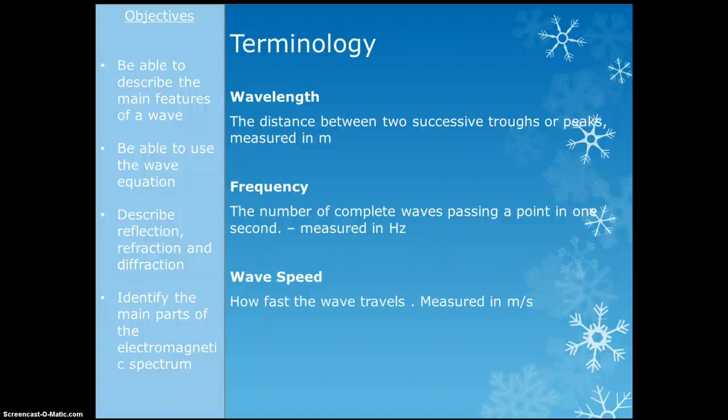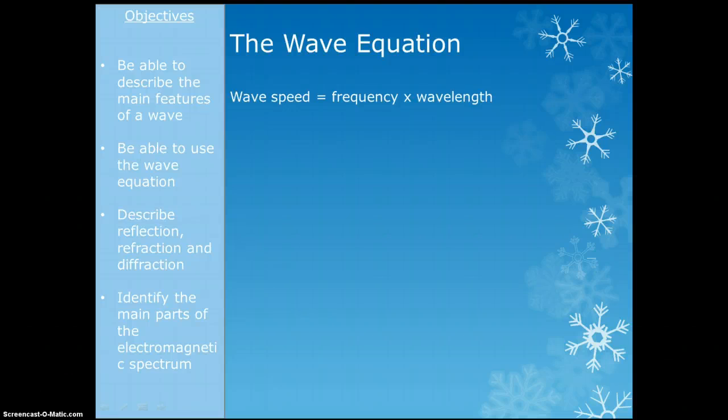These three features are all very closely related and fit into an equation: wave speed equals frequency times wavelength. Sometimes we write it in symbols - the symbol for wave speed is c, for frequency is f, and for wavelength is the Greek letter lambda.